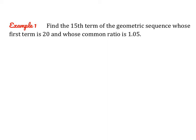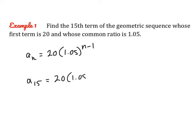So a sub n equals a sub 1, which is 20, times r, which is 1.05, to the power of n minus 1. This is our equation, and to find the 15th term, we just plug in 15 for n. So this will be to the power of 14. Then you can get a decimal approximation from your calculator, and it's about 39.60.